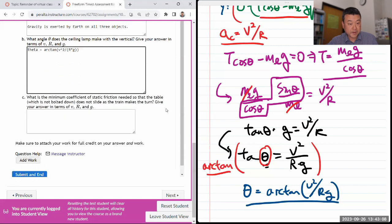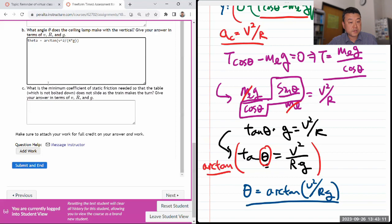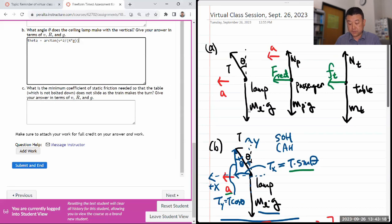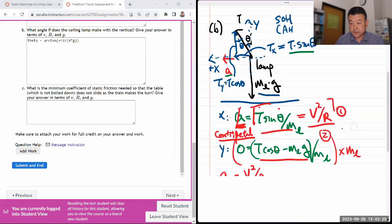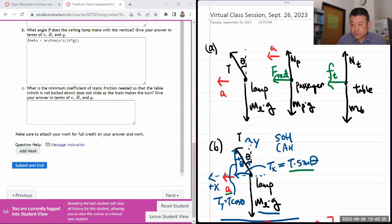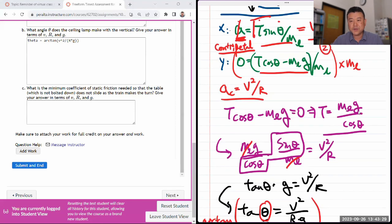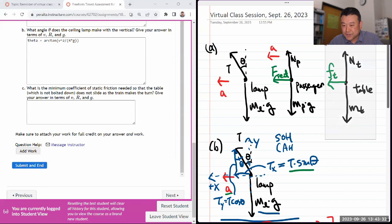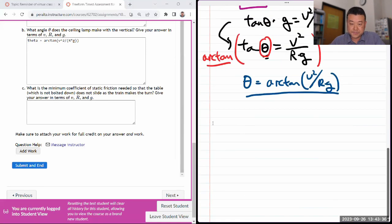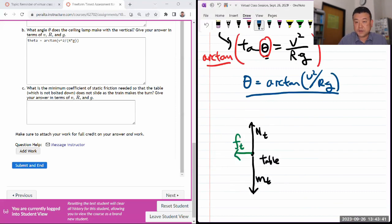Let's do part C. It says minimum coefficient of friction needed so that the table does not slide. I need to go up and copy the other free body diagram for the table, and we'll start from there.